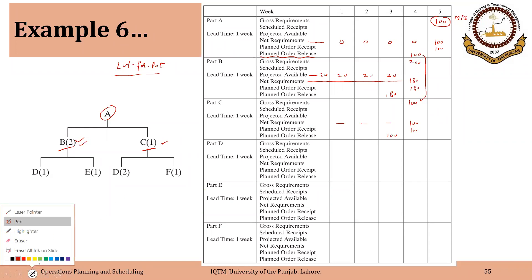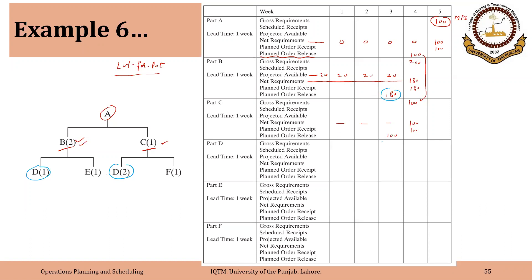Component D is part of both B and C. First, the requirement coming from B is 180 in week 3. Two Ds are required to make one C, so that is 100 times 2 equals 200. Total requirement for D is 380. With no inventory available, net requirements are 380 in week 3. With lot-for-lot policy, planned order receipt will be 380 and planned order release will be 380, since lead time is one week for all components including C, B, and A.